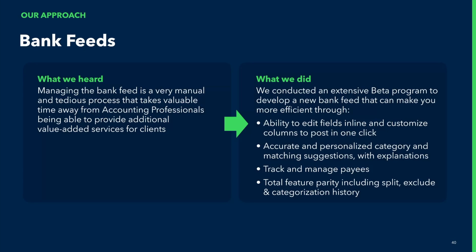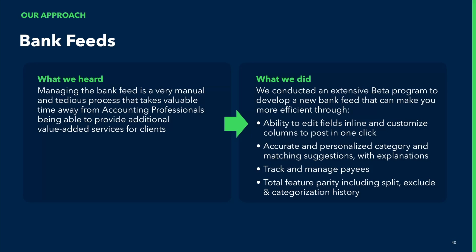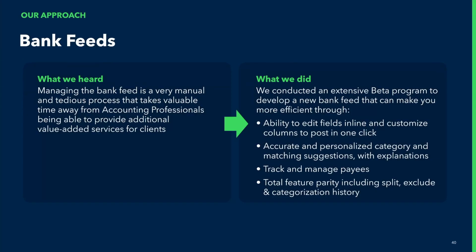Based on this beta program, we've now launched a new version of the bank feed to help you become more efficient. Key improvements include: number one, the ability to edit transactions inline and post without clicking to open an overlay; number two, more accurate and personalized category and matching suggestions, now based on a personalized model that leverages your transaction history with transparent explanations; number three, easier and more efficient tracking and managing of payees; and last, we've maintained feature parity — split, exclude, rules, and transaction history are all still easily accessible.